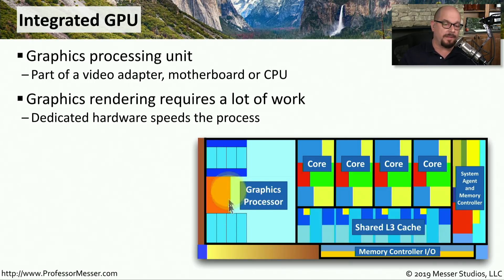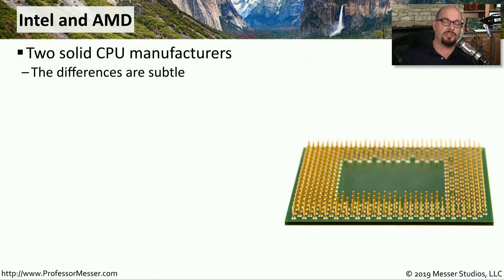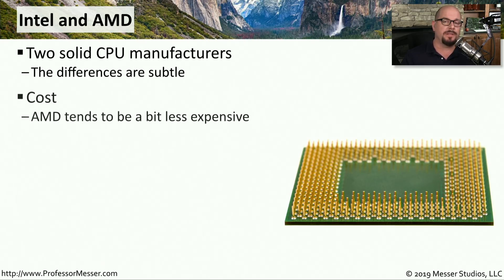Two of the very big players in consumer CPUs are Intel and AMD. There are advantages and disadvantages for both companies' products, but the differences are slowly merging together. It becomes more and more difficult to decide whether the right chip for you is Intel or AMD, depending on your requirements. The cost of AMD tends to be a bit less expensive than Intel, which allows them to sell many more entry-level PCs than you might find with Intel chips.